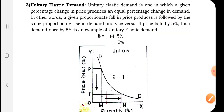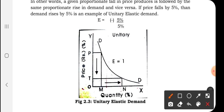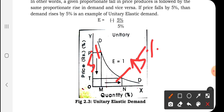In the graph showing unitary elastic demand where E equals 1, when the price decreases by 5 percent, the quantity demanded increases by 5 percent. Both changes are equal, hence elasticity of demand equals 1. This is the case of unitary elastic demand.